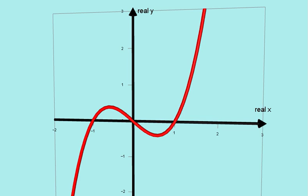This is a typical cubic graph which crosses the x-axis three times. We say that the solutions of the equation y equals 0 are the places where the graph crosses the x-axis, in this case at negative 1, 0, and positive 1.